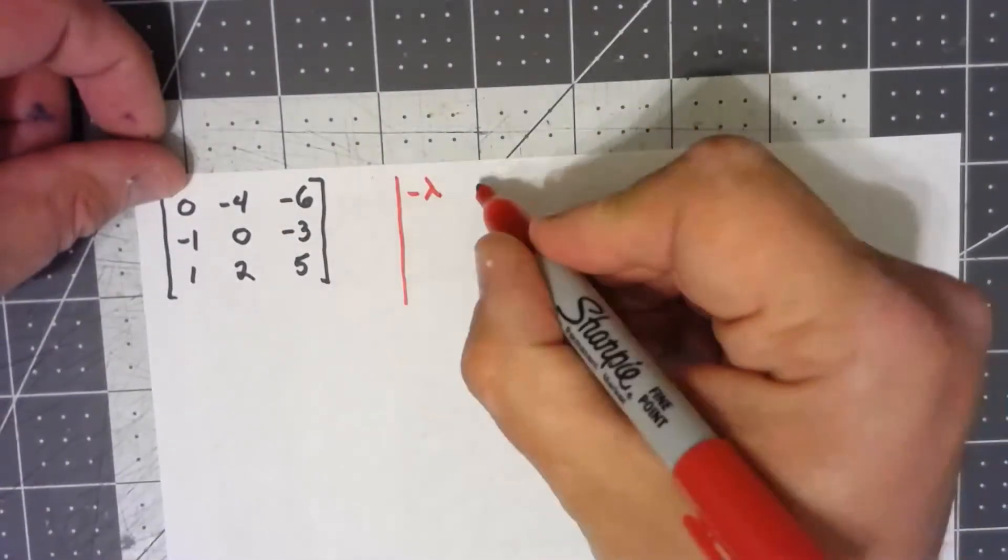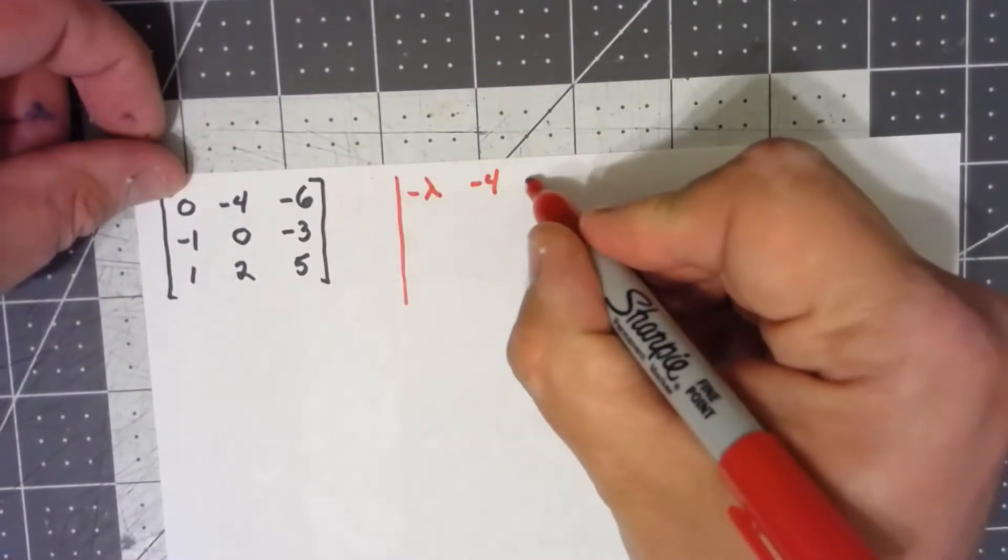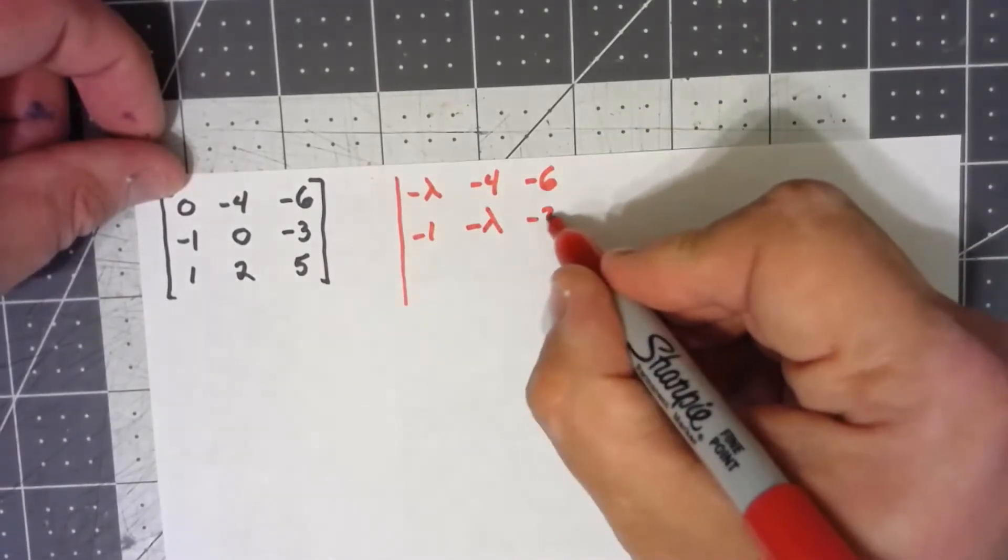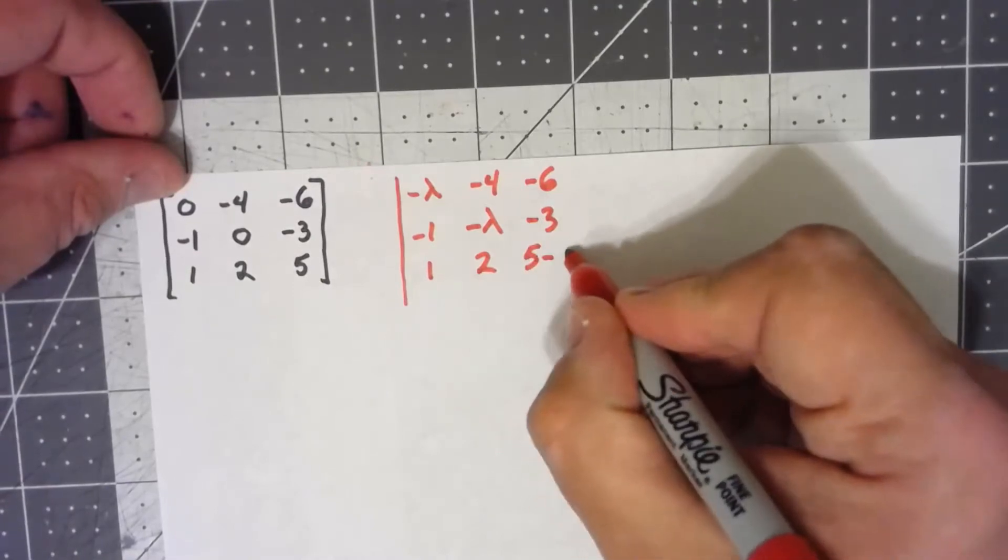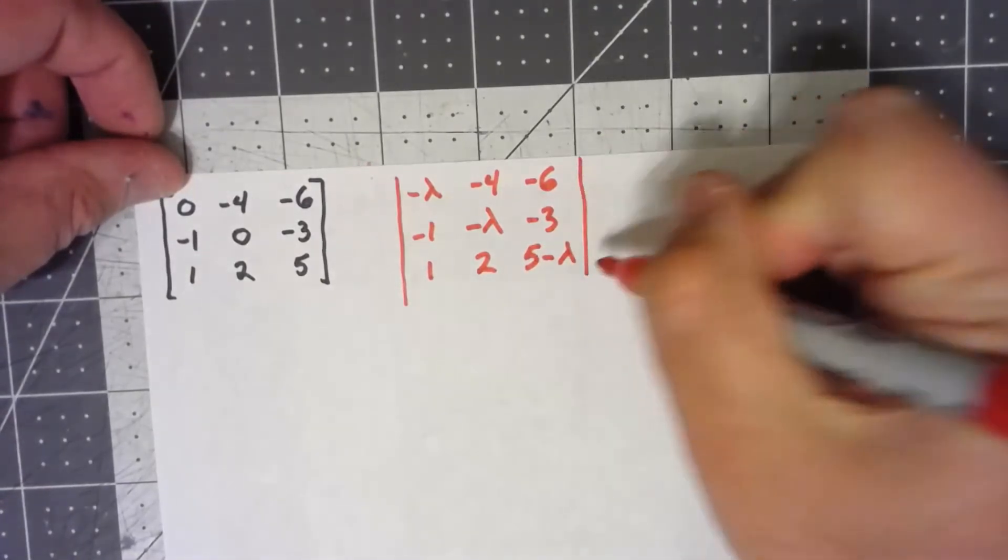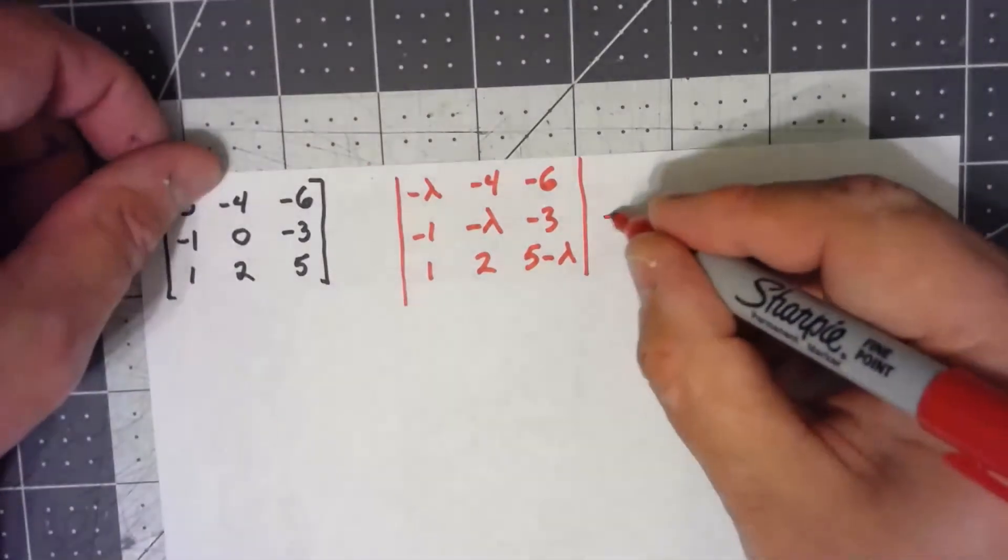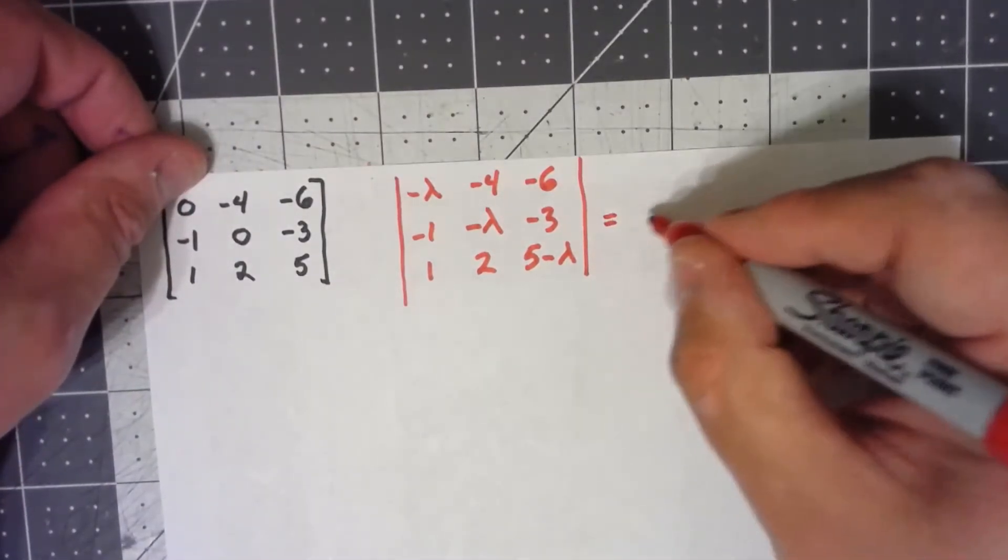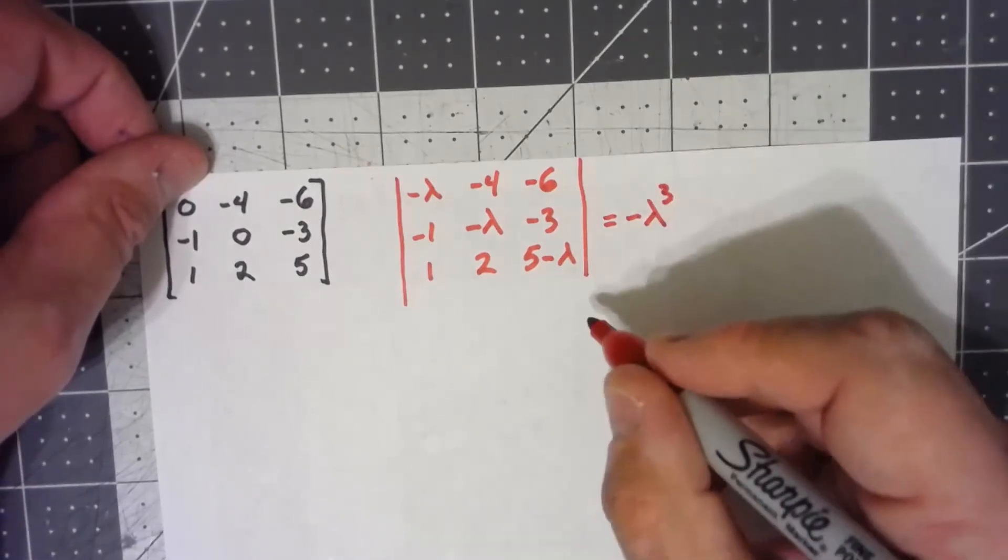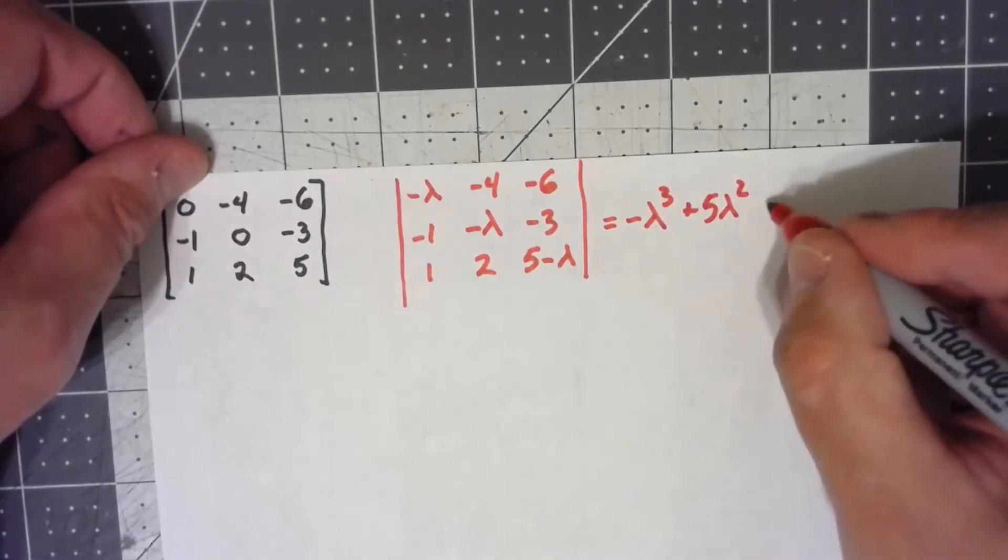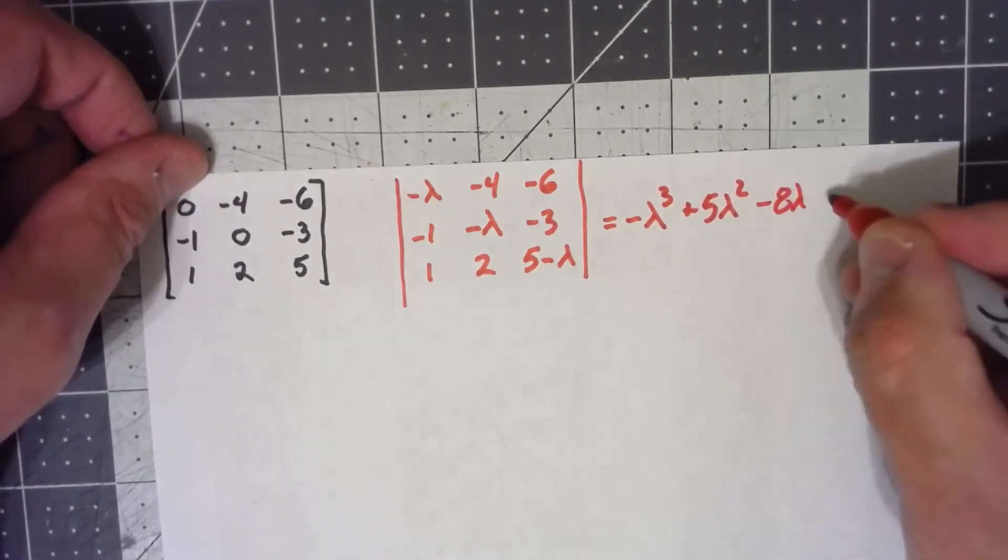So the first thing is I want to find my characteristic polynomial. So I'm going to take A minus lambda I, which is going to give me negative lambda there, negative four, negative six, negative one, zero minus lambda, negative three, one, two, five minus lambda. And this is one of the things that I think I'm going to just skip over. I'm not going to go ahead and work out the whole determinant there; you should know how to do that. And if we do, we get the characteristic polynomial of negative lambda cubed plus five lambda squared minus eight lambda plus four.